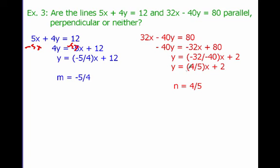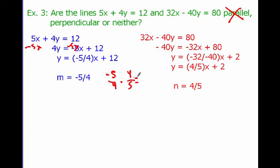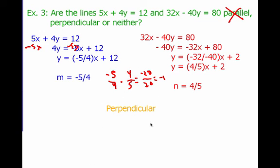Looking at these slopes, they're different so the lines can't be parallel. These look like opposite reciprocals — negative 5 fourths and 4 fifths: five on top, five on bottom, four on bottom, four on top, one negative and one positive. We can check: negative 5 times 4 is negative 20, and 5 times 4 is 20, so negative 20 divided by positive 20 is negative 1. So these are in fact perpendicular lines, because their slopes are opposite reciprocals of each other.